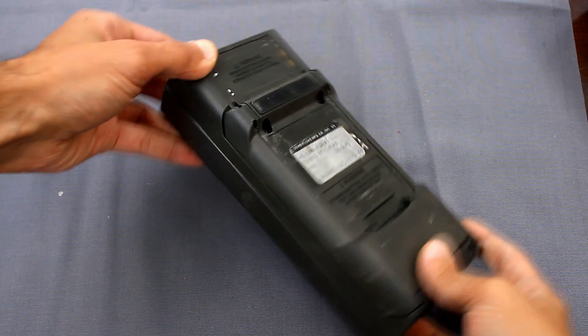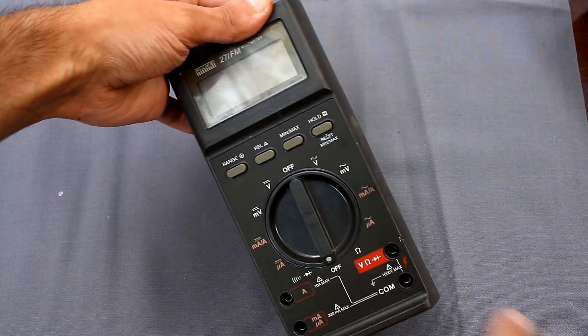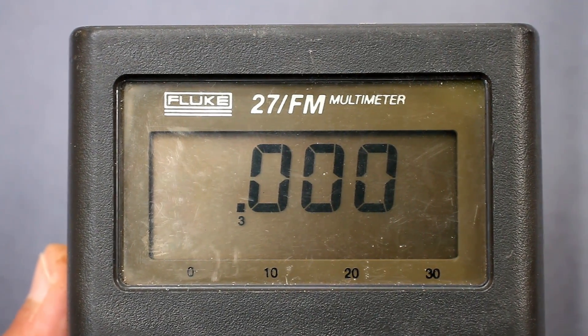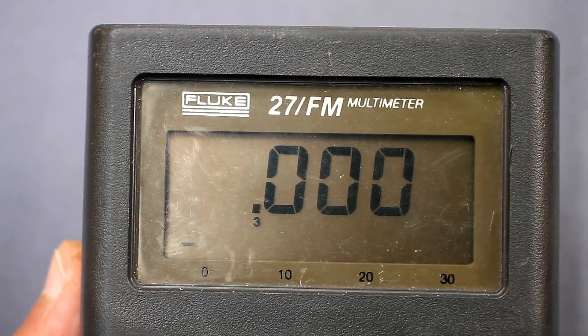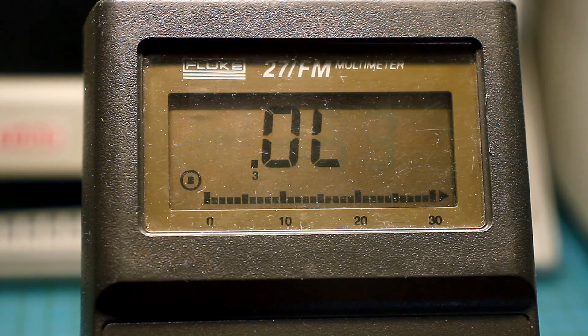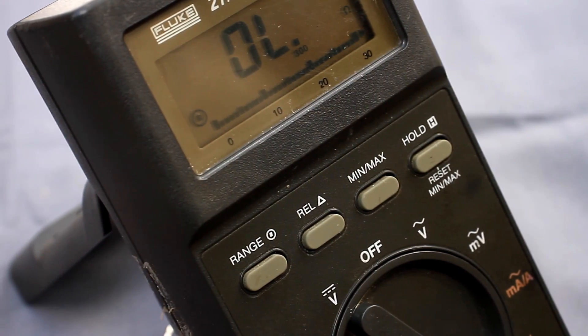The multimeter is heavy, bulky, but extremely strong, with thick body walls and moisture protection. The device has an LCD display for 3200 counts, updates 2 times per second. There is a bar graph for 31 segments. The update rate is 25 times per second.